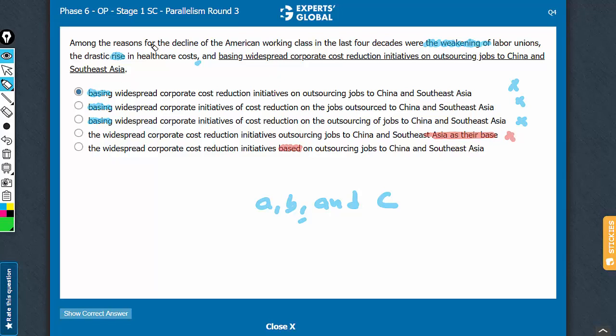Let's confirm choice E. Among the reasons for the decline of the American working class in the last four decades were, and then the list: the weakening of something, the drastic rise in something, and the widespread corporate cost reduction initiatives. So, the noun here is initiatives.